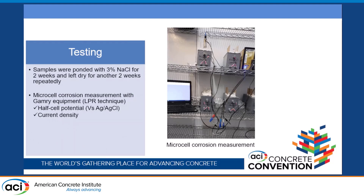For each series, we had two beams. For testing, we applied 3% sodium chloride on top of the beam, as shown in the image. The samples are left for two weeks in a cycle — every two weeks we take measurements, and then the chloride exposure is repeated. We wanted to look at two different ways of measuring corrosion: the half-cell potential, measured versus the silver/silver chloride electrode, and the corrosion current density.